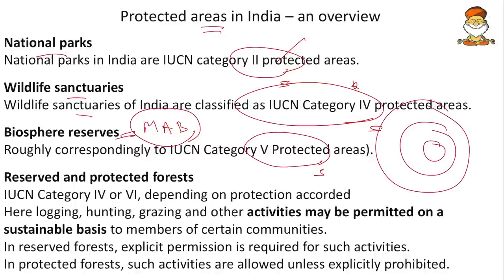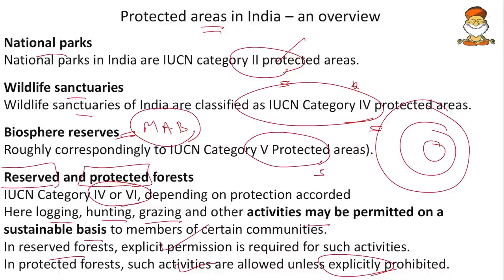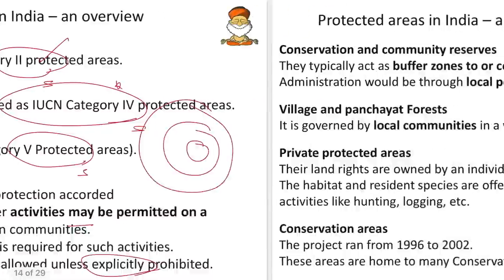Reserved and protected forests fall under IUCN Category 4 or 6 depending on protection accorded. Logging, hunting, and grazing may be permitted on a sustainable basis. In reserved forests, explicit permission is required for such activities. In protected forests, such activities are allowed unless explicitly prohibited. So reserved forests have more prohibition, protected forests allow more — both are less stringent than national parks or wildlife sanctuaries.